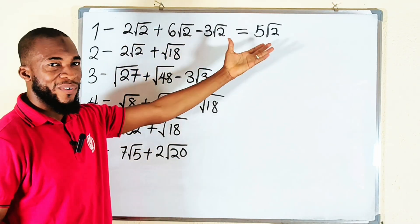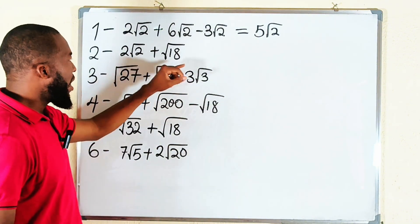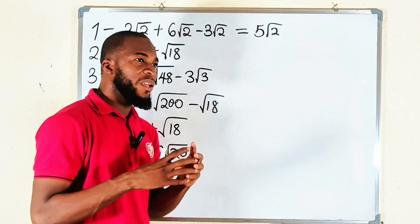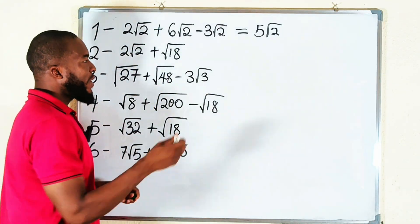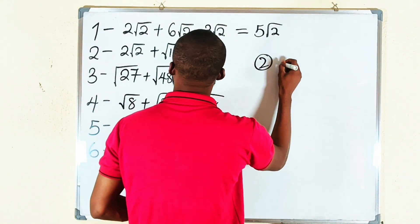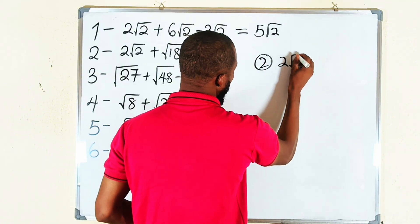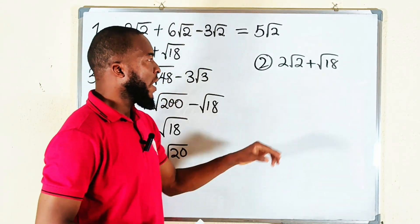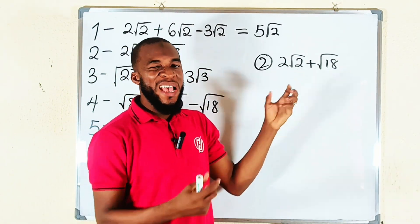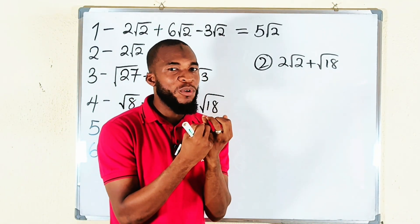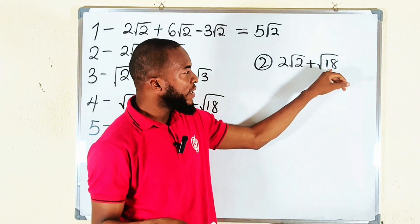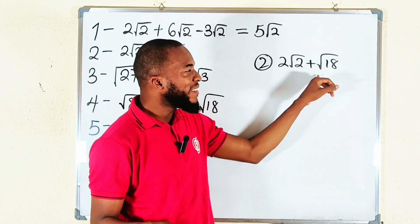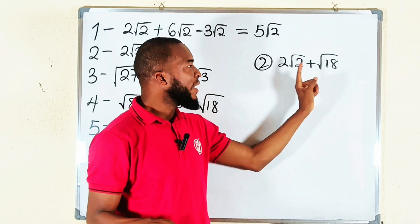Another way is to look at square roots as a fruit like an apple: two apples plus six apples is eight apples, take away three apples is five apples. But where you have different surds, you have to convert them into similar surds. For example, number two: two times square root of two, plus square root of 18. Since two is the smallest prime number you cannot break it down further, pay attention to the other square root and make sure you have two in it.